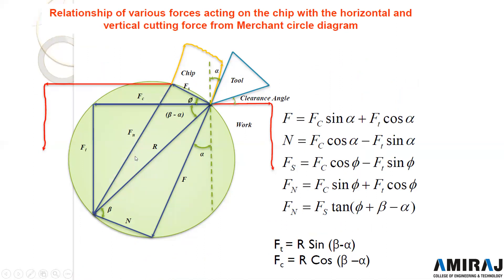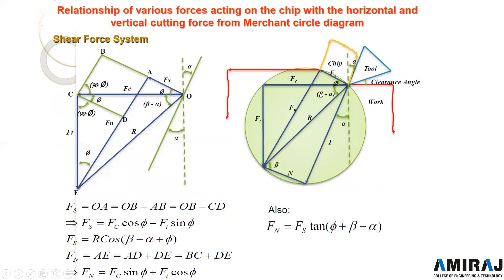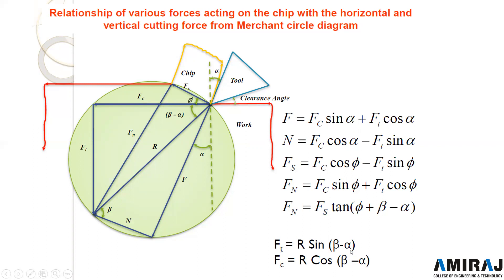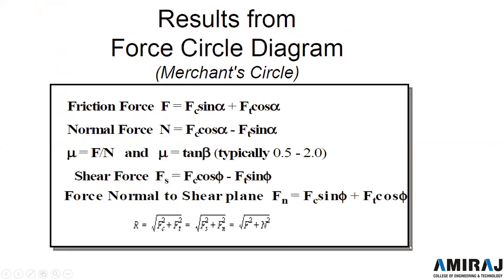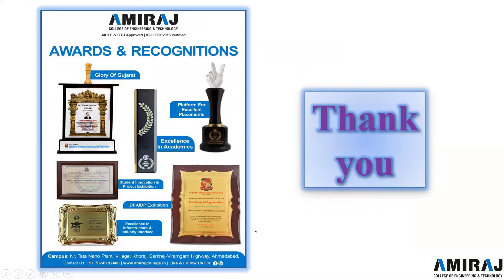The cutting force Fc and thrust force Ft are expressed in terms of the resultant R and the angle (β − α) as: Fc = R·cos(β − α) and Ft = R·sin(β − α). The results from the Merchant Circle Diagram give the friction force, normal force, coefficient of friction μ, shear force, and shear normal force — and all resultants are consistent with each other. That is it for today's lecture, thank you very much and have a nice day.